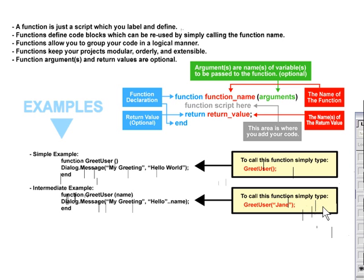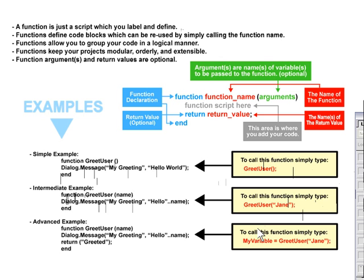Now let's take a look at an advanced version of this same function. Here in our advanced example, you can see that not only are we passing the name to the script identically as in the intermediate example, but now we're returning a value to our main script. So what we're doing here is again accepting the user's name.